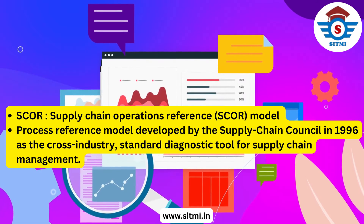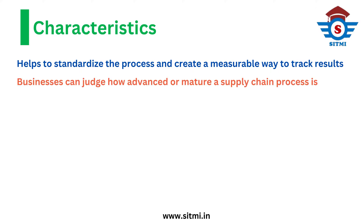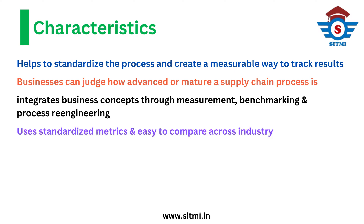The SCOR model helps to standardize processes and creates a measurable way to track results. It works across industries using common definitions that apply to any supply chain process. Using the SCOR model, businesses can know how advanced or mature a supply chain process is and how well it is aligned to a business objective. The model integrates business concepts through measurement, benchmarking, and process re-engineering into one framework, and uses standardized metrics so organizations can compare their performance.